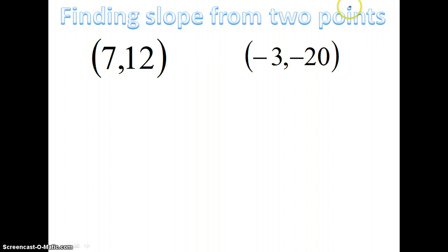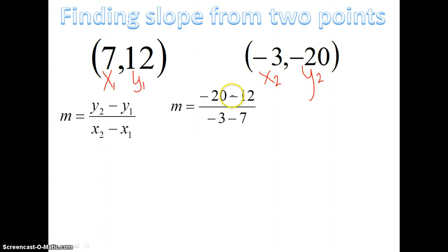So, now, let's just say that we have two points and we don't have a table. Well, then we're going to use the slope formula. So, we need to label our x and our y. So, this is x1, y1, x2, y2. So, now I'm going to plug them into my slope formula. Have y2, which is going to be negative 20, minus y1, which is 12, divided by x2, which is negative 3, minus x1, which is 7.